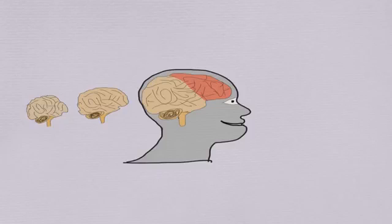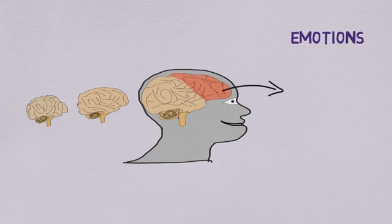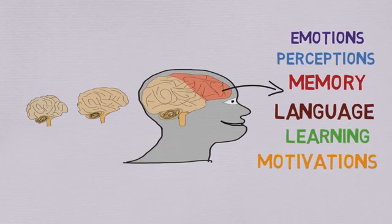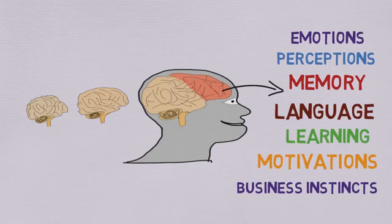Evolutionary psychologists examine how the survival challenges of our ancestors living between 2.8 million BC and 60,000 BC shaped our ancestors' brains with a particular focus on the development of emotions, perceptions, memory, language, learning, human motivations, and in the case of this video, business instincts.